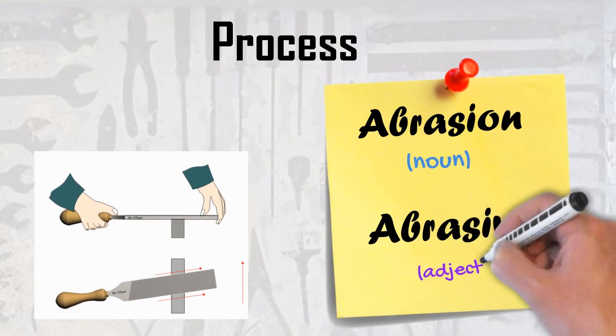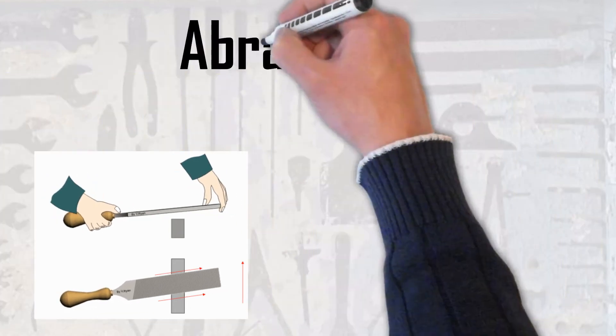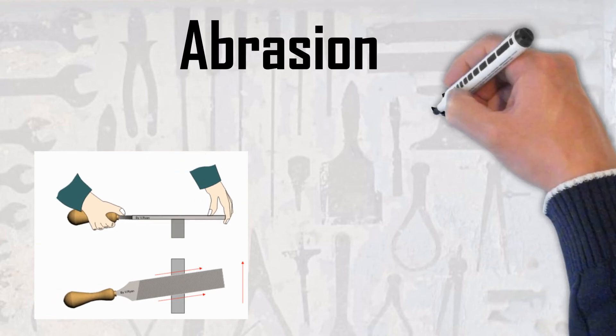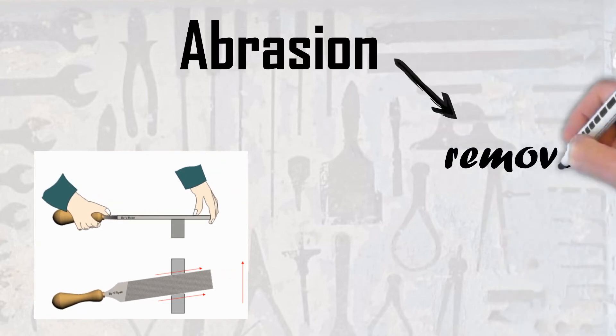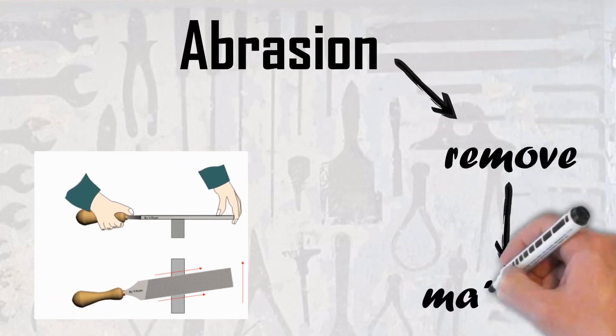So we can class it as an abrasive process. Abrasion is when you rub something over and over again to remove material or to make something smooth.